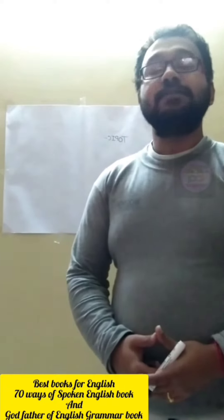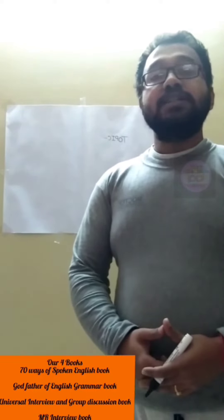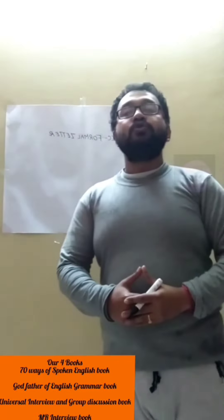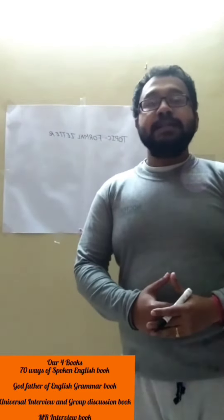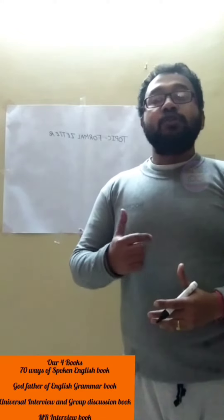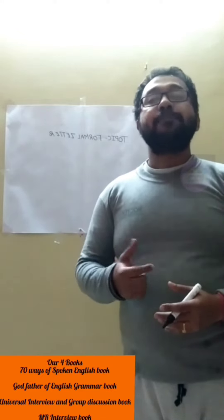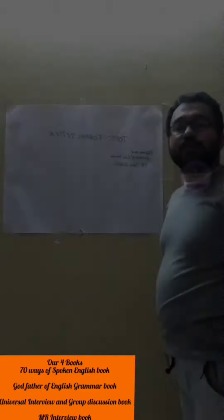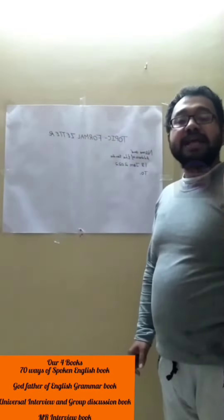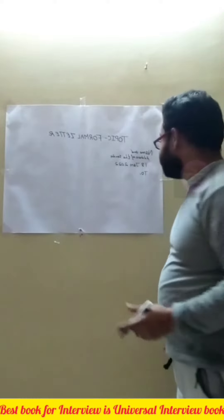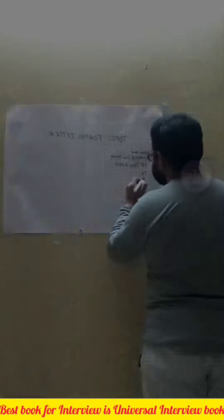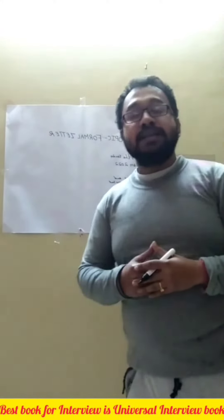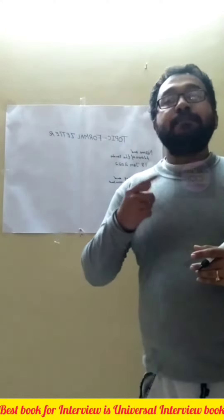Today in this class we will discuss about the structure of a formal letter. To start a formal letter, at first on the top of the left side we have to write the name and address of the sender, and the address of the recipient. We also have to write the subject. The subject is the purpose of your writing the letter, stated in one line.